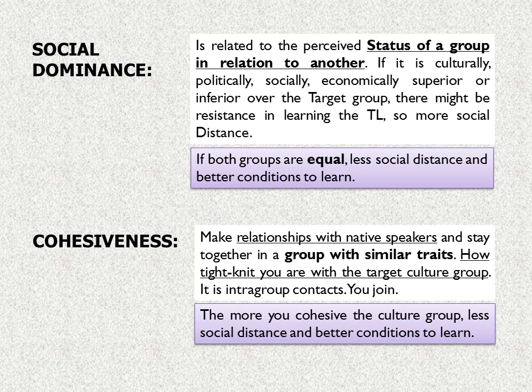The fifth social factor is cohesiveness. It means making relationships with native speakers and staying together in a group with similar traits. It is how close you are with the target culture group — it involves intergroup contacts and how you join the target group. The more cohesive you are to the cultural group, the less social distance and the better the conditions to learn.